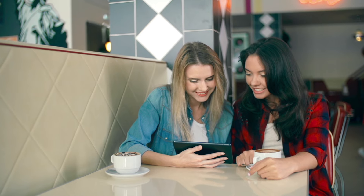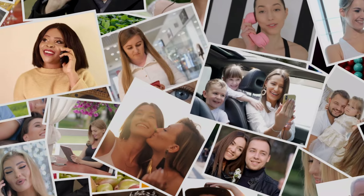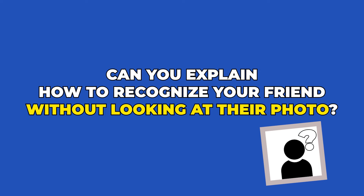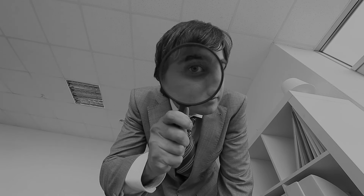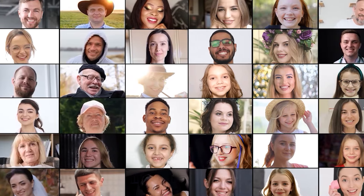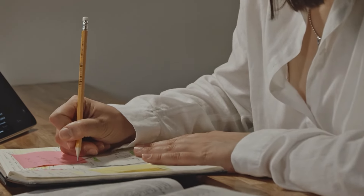Let me give you an example. Let's say you have a friend. If I give you a thousand photos of faces, you can probably identify your friend. But can you explain how to recognize your friend — without looking at their photo — in a way that I could identify them among a thousand people? It's probably going to be impossible. You use implicit knowledge to recognize your friend, and it's nearly impossible to identify someone among a thousand people just by accumulating explicit knowledge.